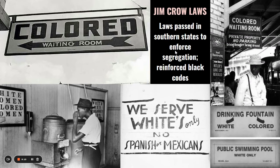Another example is Jim Crow laws — laws passed in Southern states to enforce segregation and reinforce those black codes. That's when you see drinking fountains labeled 'whites only' or 'coloreds only.' This is when segregation really took effect, and it was going to last all the way until the 1960s — almost 100 years.